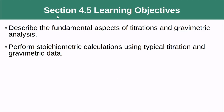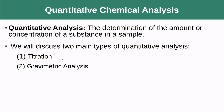Hello, everybody. In this video, we're going to be covering section 4.5, where we're going to describe the fundamental aspects of titration and gravimetric analysis, and we're going to perform the stoichiometric calculations required during a typical titration or gravimetric analysis. Both of these techniques are what we call quantitative analysis — they're used to determine the amount or concentration of a substance in a sample.